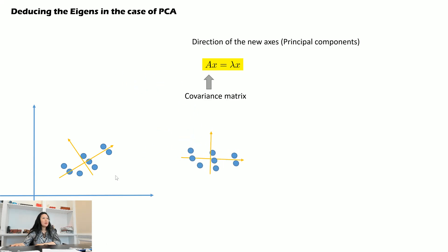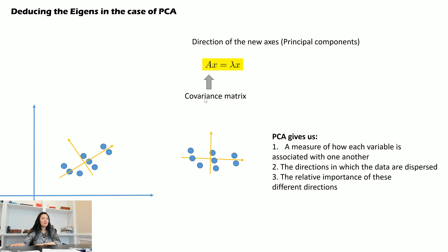And that means the eigenvectors of this covariance matrix will give us the directions of the new axes, and we call these principal components. So what PCA gives us is, first of all, a measure of how each variable is associated with one another via the calculation of the covariance matrix. We also know the directions of the new axes, which are the directions in which data are dispersed, and the relative importance of these different directions. Because as we mentioned previously, the more important the eigenvector, the higher its eigenvalue.